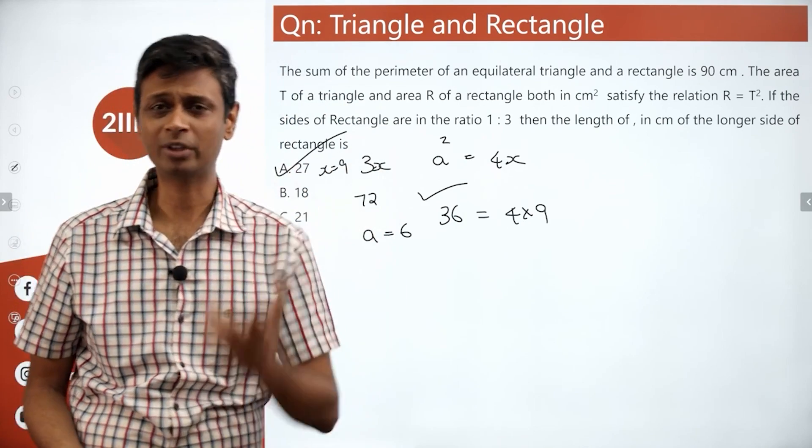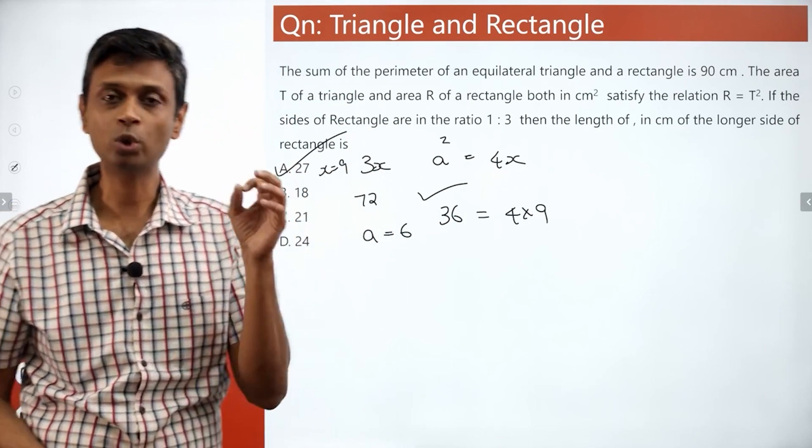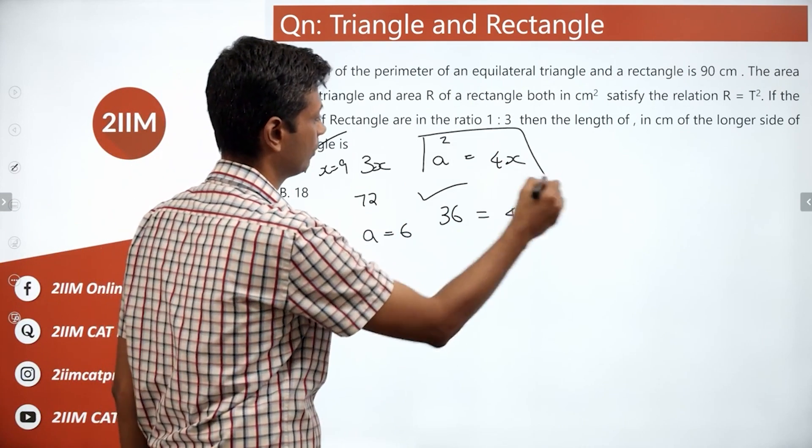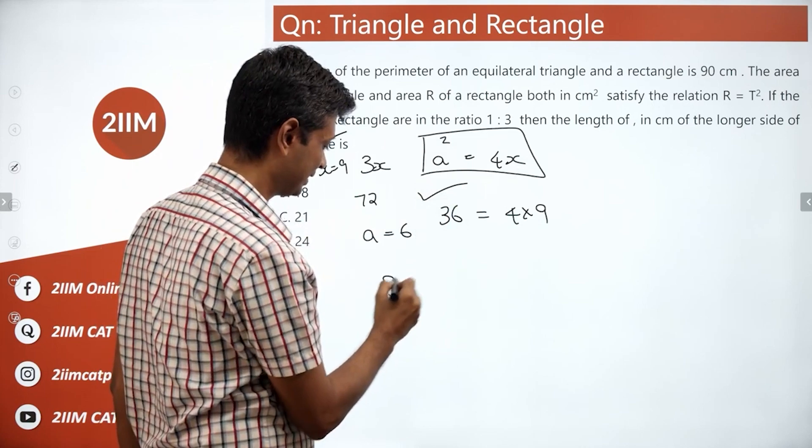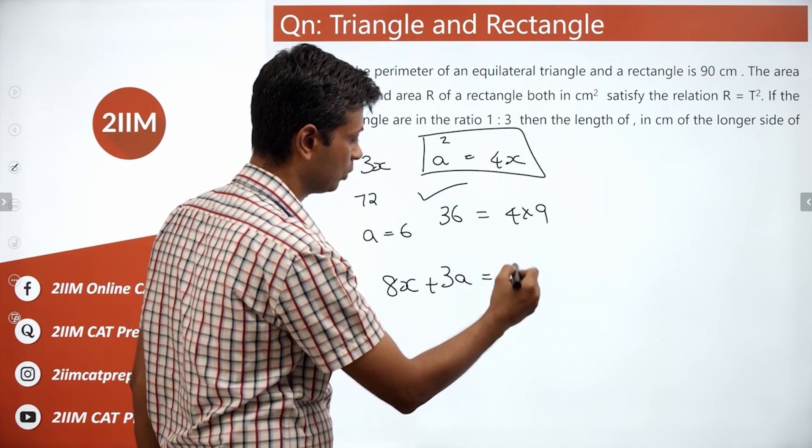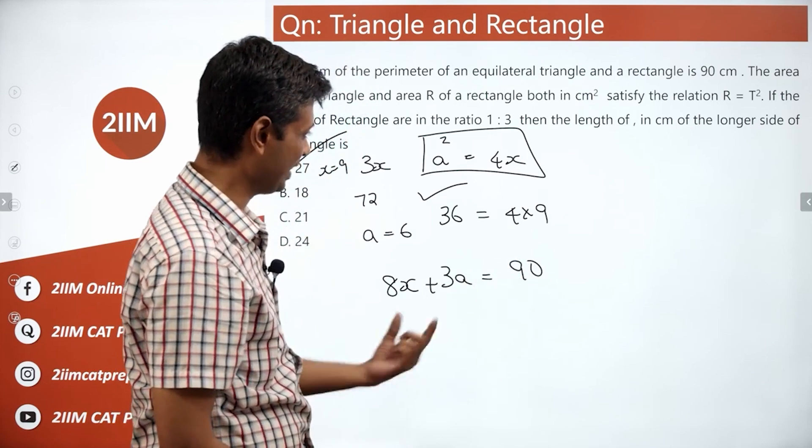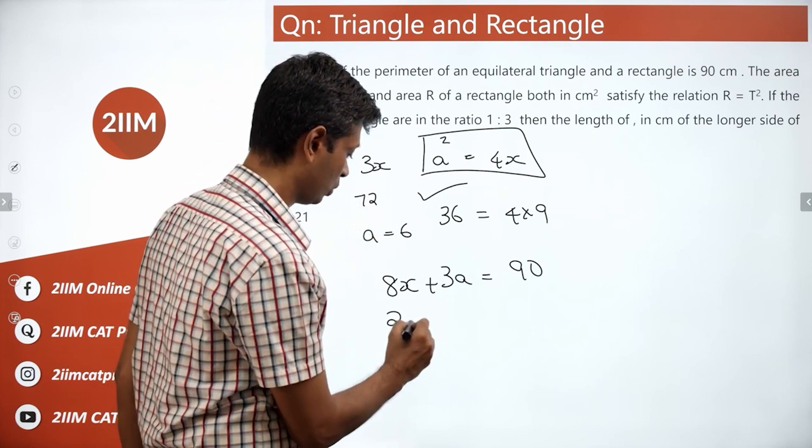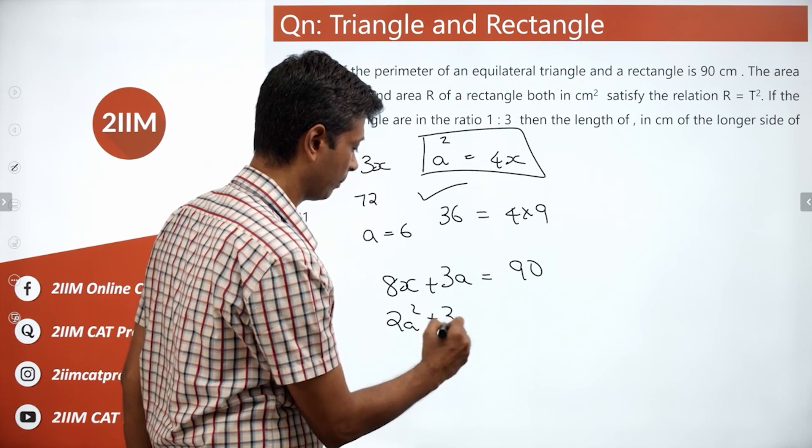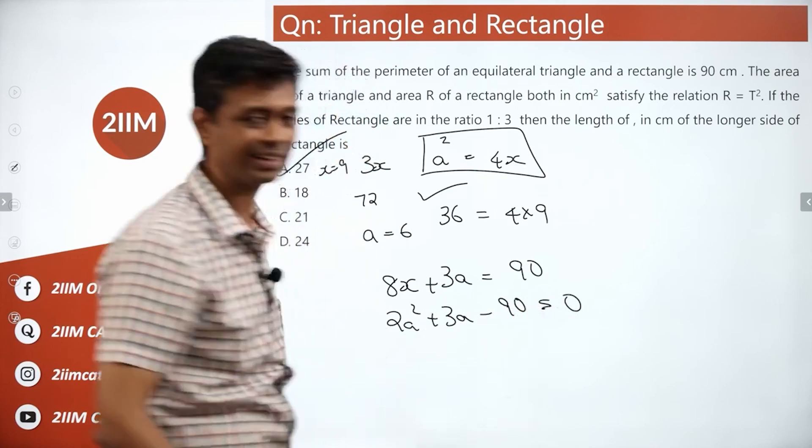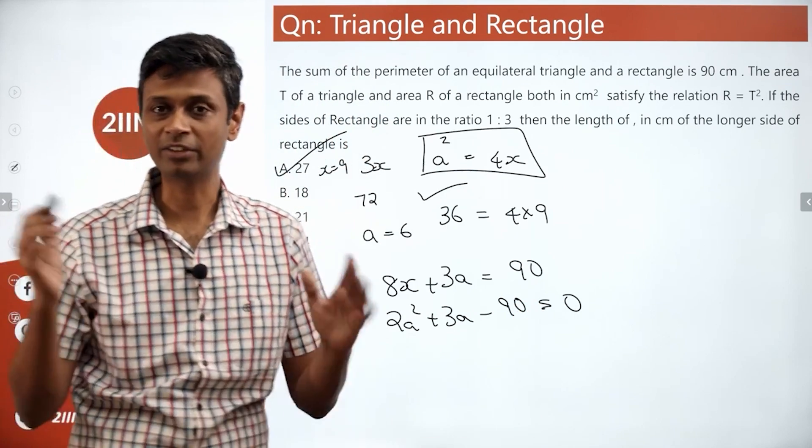After that point of time, we can slip into trial and error and then simplify. If we want to still avoid trial and error, we know A square equal to 4x. We know 8x plus 3A equals 90. A square is 4x. So, 8x would be 2A square. 2A square plus 3A minus 90 equal to 0. Solve that.